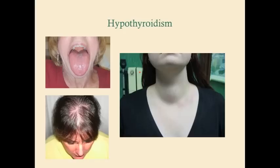Here are some symptoms you can see in hypothyroidism. On the right is a visible goiter, on the left is alopecia in this woman, and then macroglossia — this enlarged tongue.